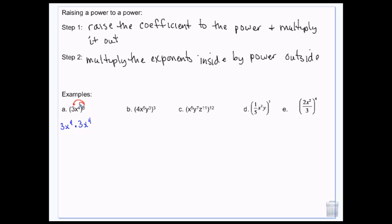I'm going to distribute this squared to both of those numbers. So this is 3 squared and x to the 4th squared. 3 squared is 9, and to raise this power I multiply these two exponents, so I get 9x to the 8th.